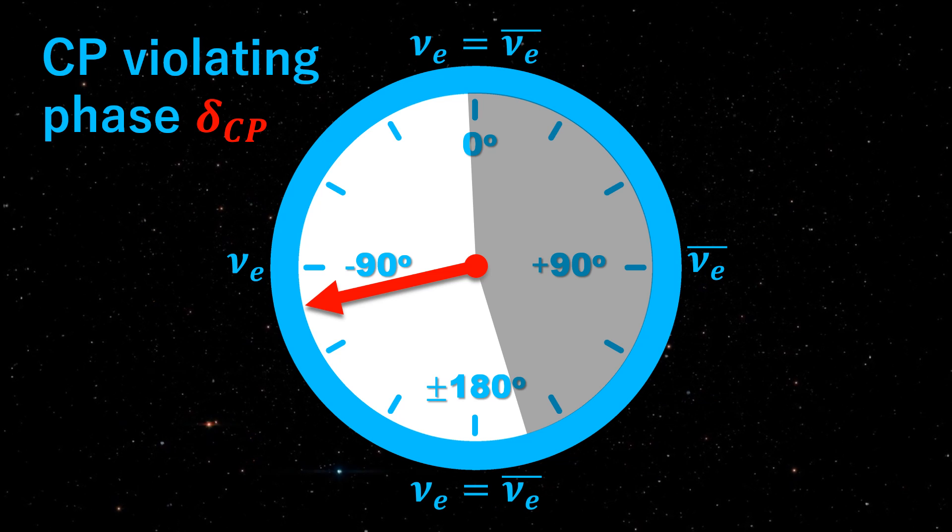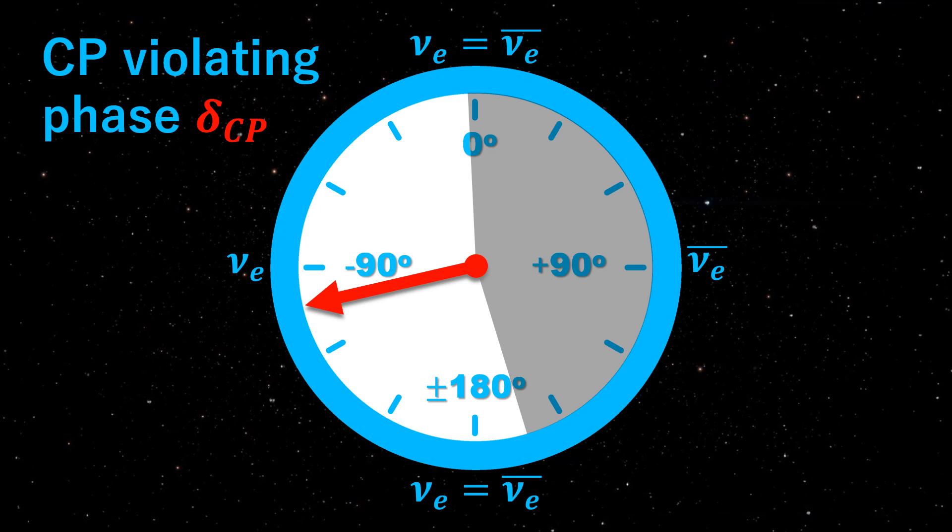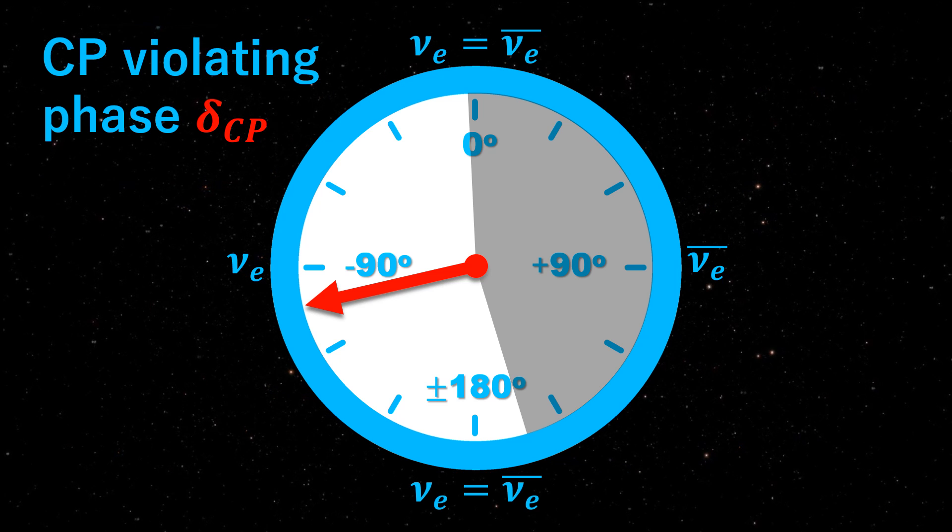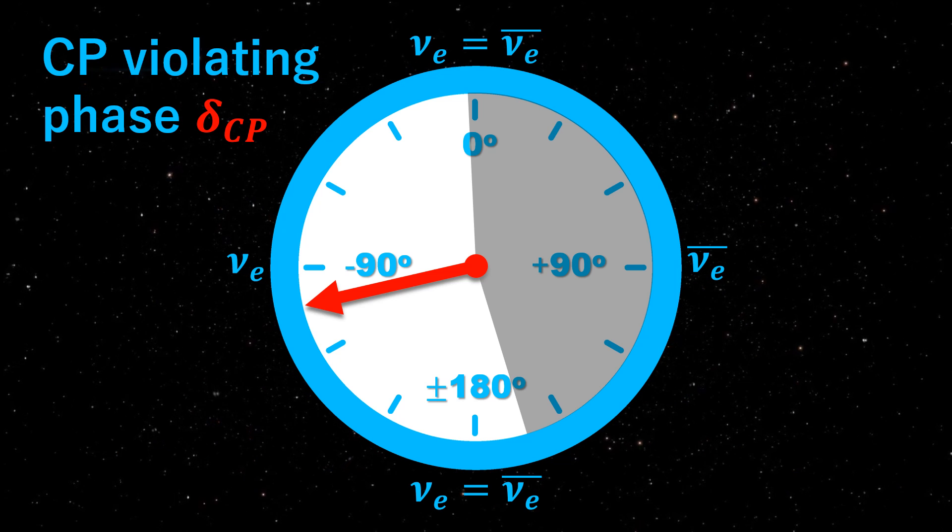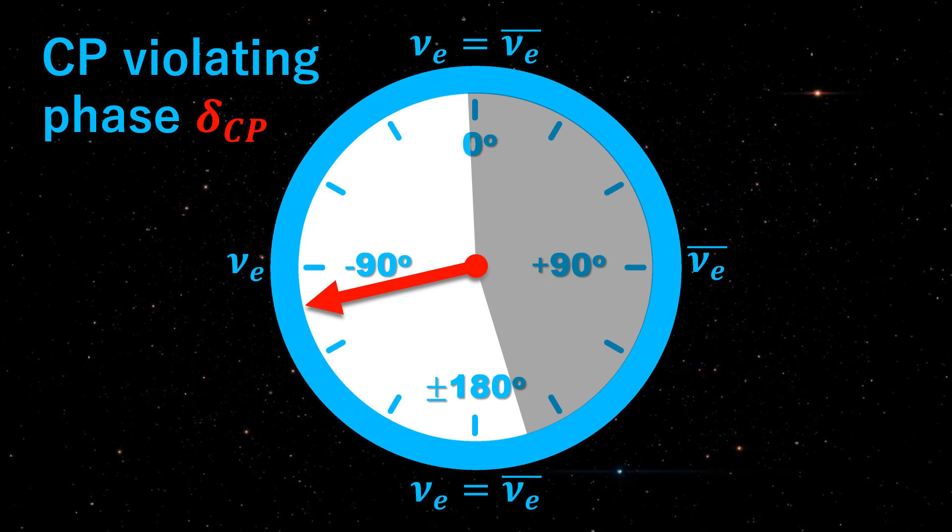The T2K data is most compatible with a value close to δ_CP equals minus 90 degrees that significantly enhances the oscillation probability of neutrinos. Using this data, T2K evaluates confidence intervals for the parameter δ_CP.